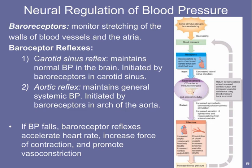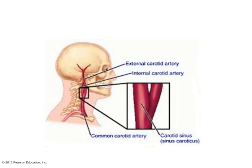Because we have baroreceptors in the aortic arch and carotid sinus, we can use this knowledge clinically. For example, someone having atrial fibrillation or flutter with an elevated heart rate can be slowed by gently massaging the carotid sinus with the thumbs, causing heart rate and blood pressure to drop to normal levels.